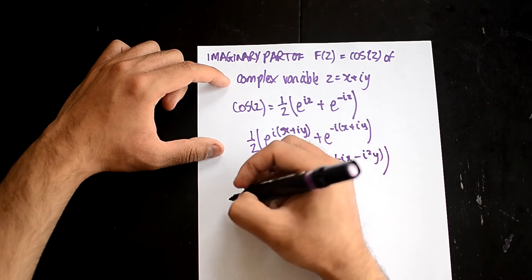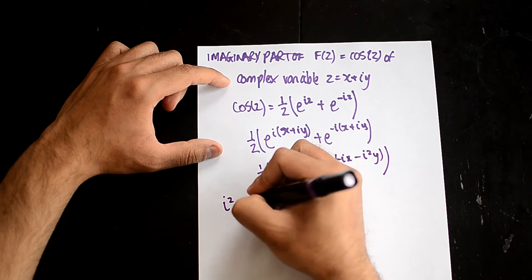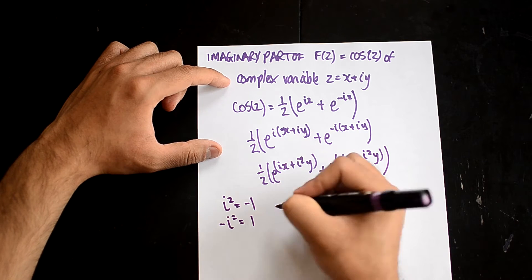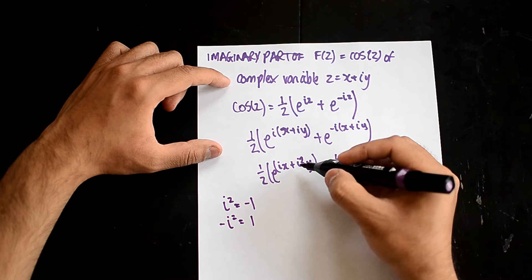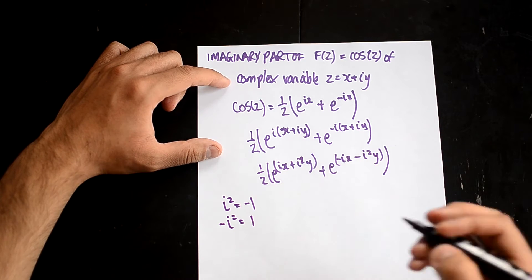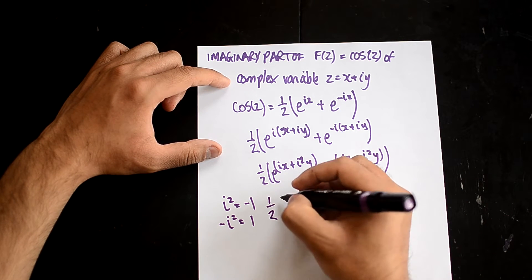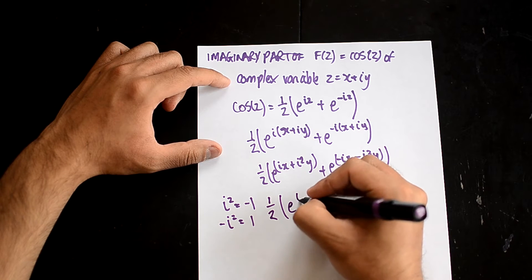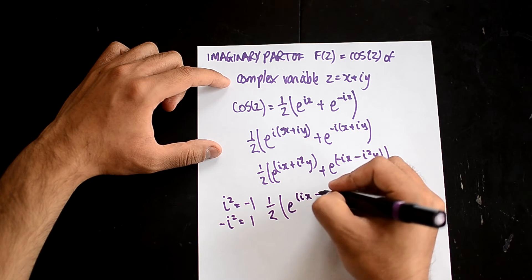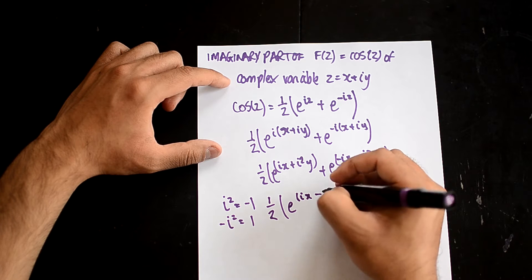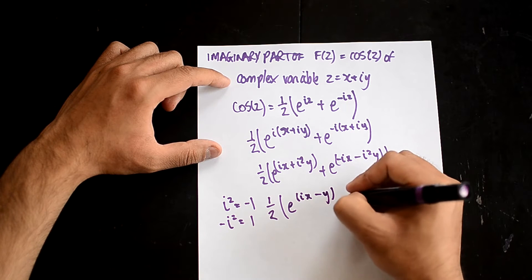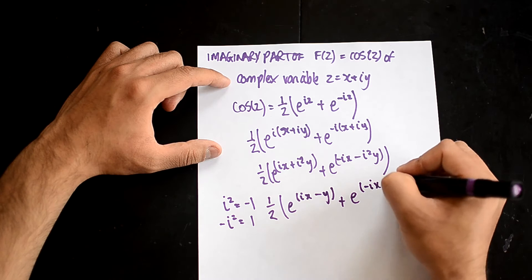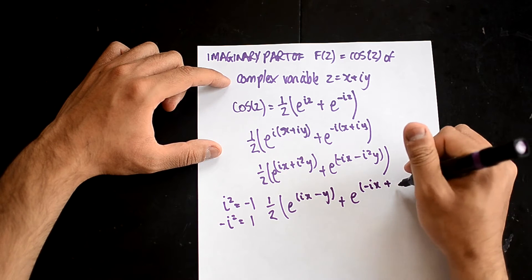You should know that i² equals minus 1, so minus i² equals 1. Here we can eliminate those i² terms, giving us one half of e^(ix - y) plus e^(-ix + y).